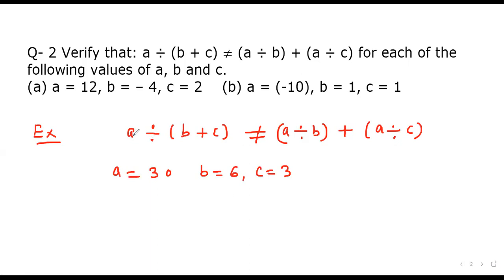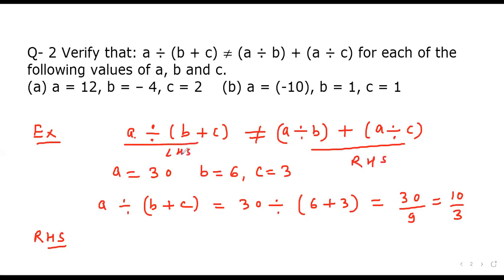If we consider the left-hand side, a divided by b plus c, that is 30 divided by b plus c, so b plus c means 6 plus 3. So 30 divided by 9 in table of 3, so we have got 10 by 3 in LHS. Now let's consider RHS. RHS means the right-hand side. So this side is called RHS and this is LHS. So LHS we have evaluated.